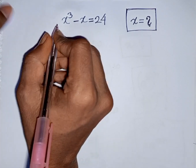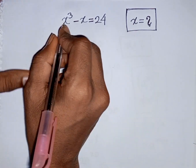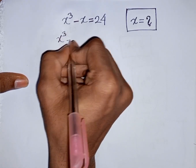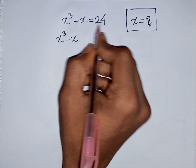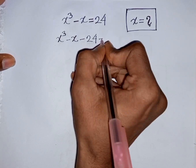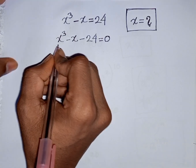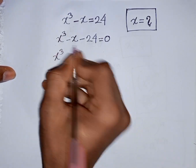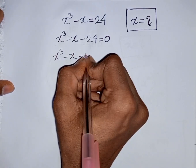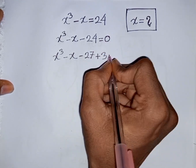How to solve x³ minus x is equal to 24. Find the value of x. We have x³ minus x, then take plus 24 to the left side, so this will be minus 24, equal to 0. Now, we can write x³ minus x minus 24, and minus 24 can be written as minus 27 plus 3, then equal to 0.